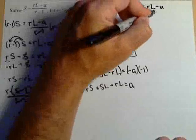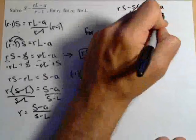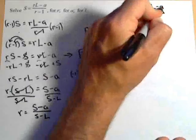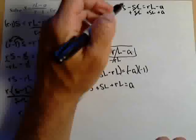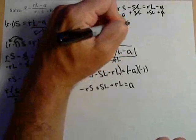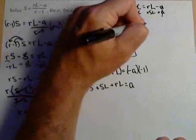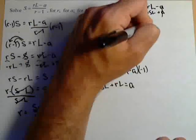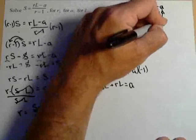That gets rid of it on that side. And we'll put those two on the same side. And we'll add A because it does not have an L to get rid of it on this side. So we have RS plus A equals RL minus SL.